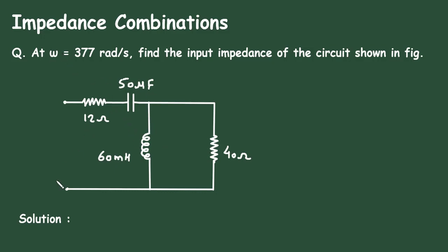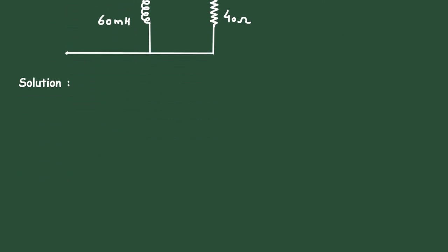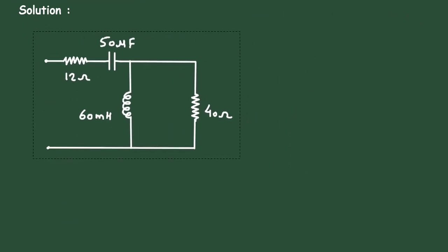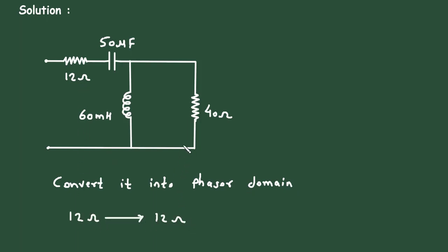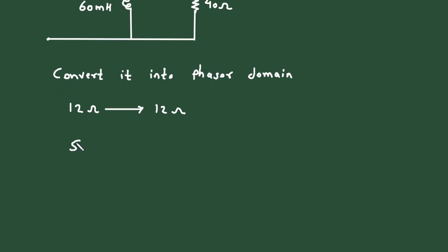Solution. So first of all, we will convert this into its equivalent phasor domain. Here we can write convert it into phasor domain. So here this 12 ohm will remain same. Then, here this is a capacitor. So 50 microfarad will change to 1 upon j omega C.